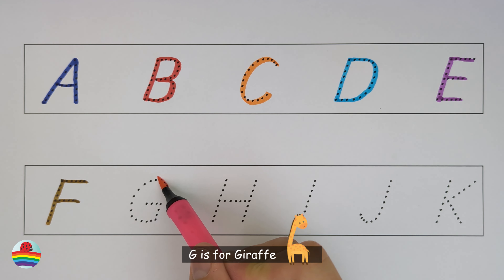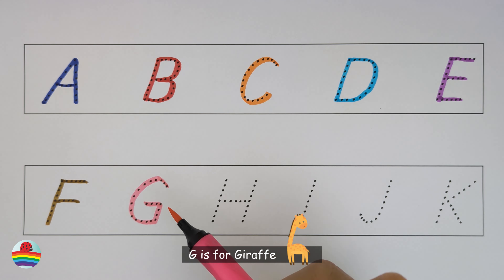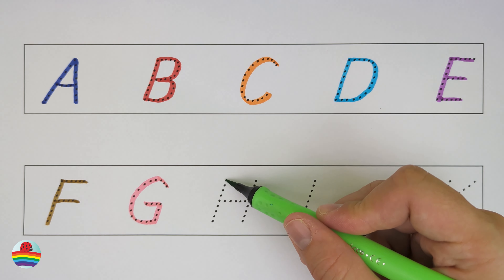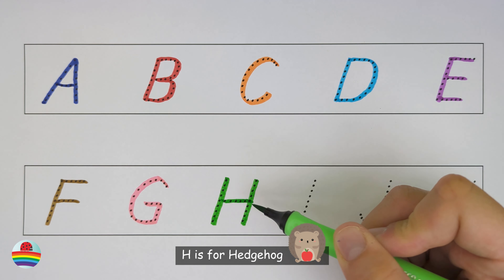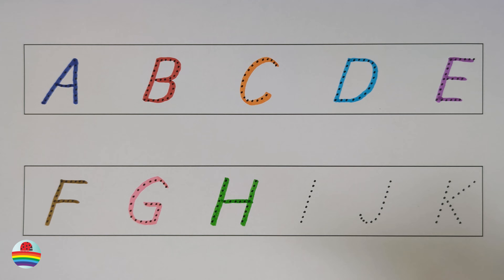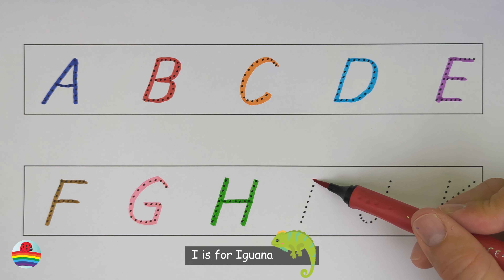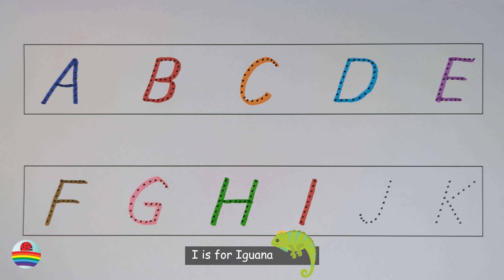G. G is for giraffe. H. H is for hedgehog. I. I is for iguana.